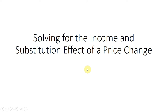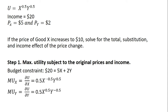In this video, we're going to look at solving for the income and substitution effect of a price change. We'll start with a consumer's utility function — good X and good Y, both raised to the 0.5 power. The consumer's income and prices are given. We want to see what happens if the price of good X increases to $10 — in other words, we want to find the total effect, substitution effect, and income effect of the price change.